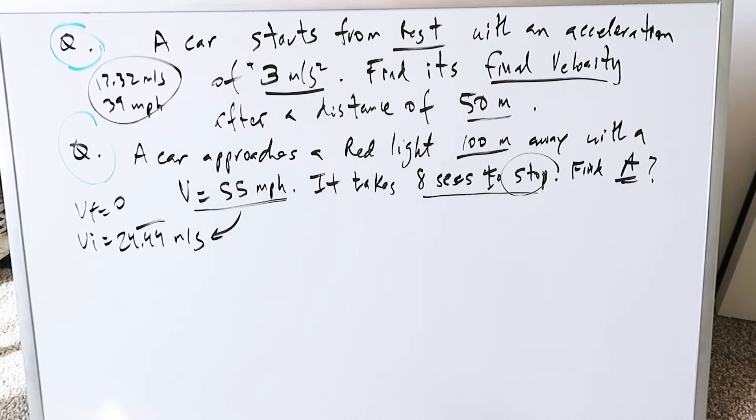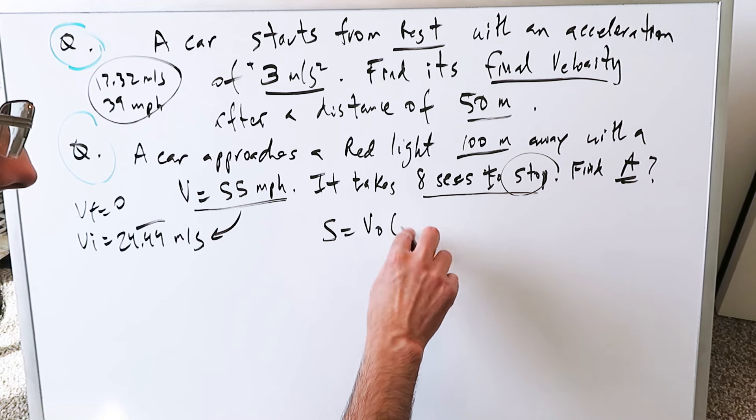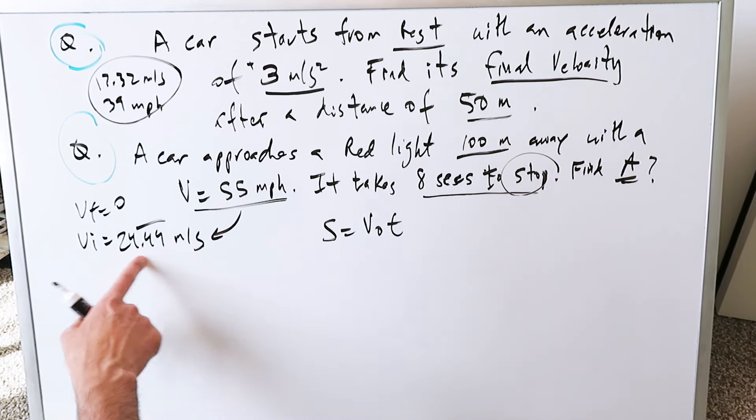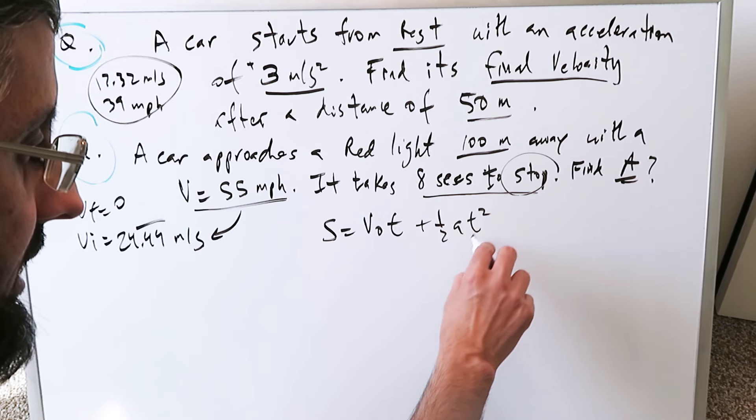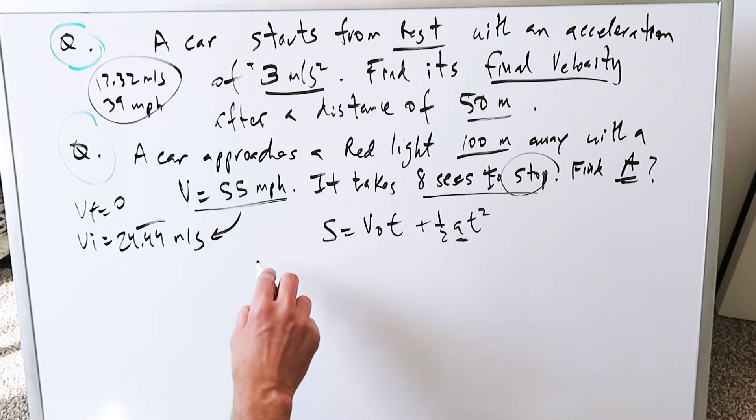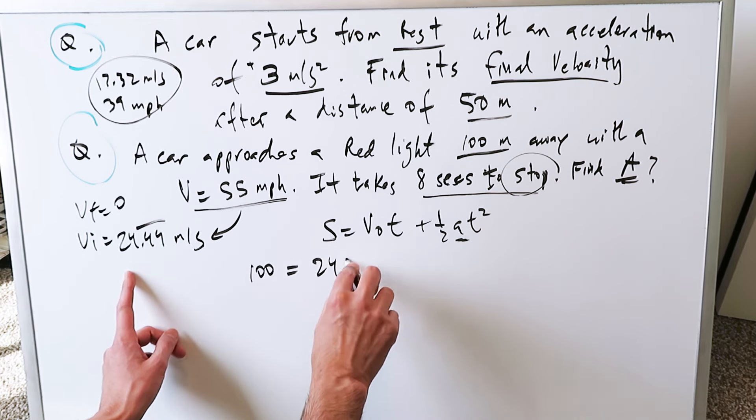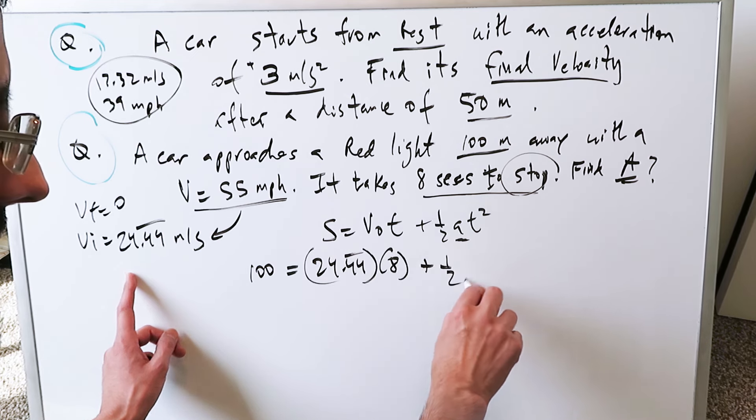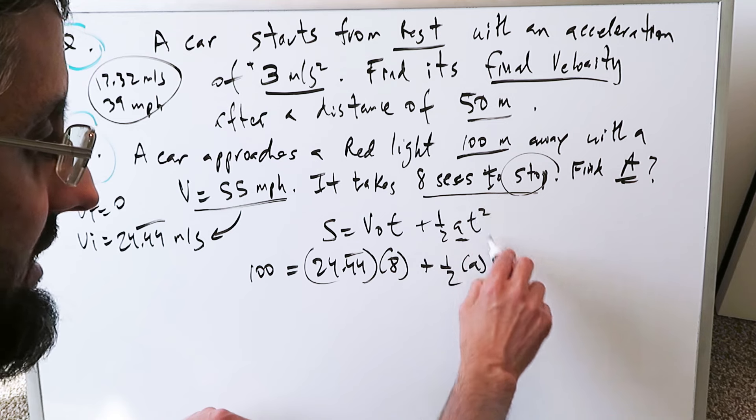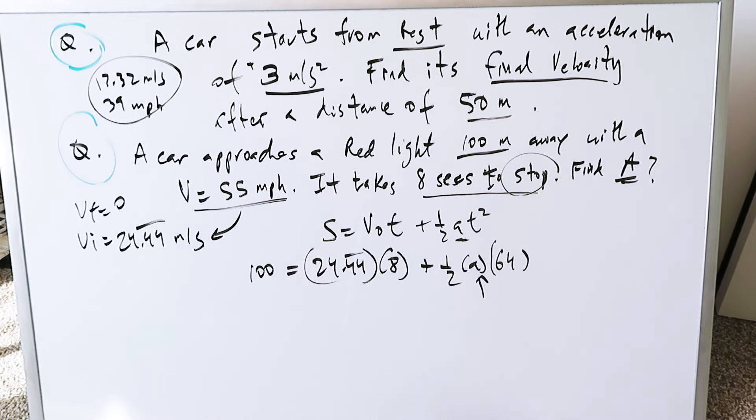Because time is involved and you have to find acceleration, your equation to use is this. Position is equal to your initial velocity times time. Here the initial velocity is this for a moving object plus half a t squared. You're solving for that. Your position here is right there. You're 100 meters away from your red light. Initial velocity is your velocity you've just calculated times time. It took 8 seconds to come to a stop. Plus half times acceleration times 8 squared, which is 64. You're solving for this. And it's not hard. It's just algebra.